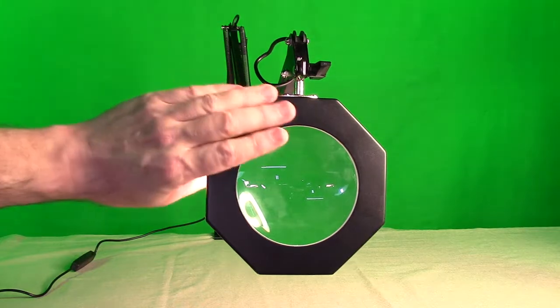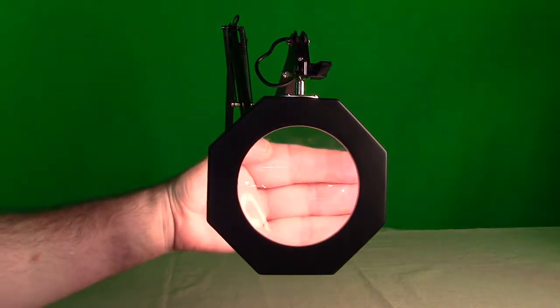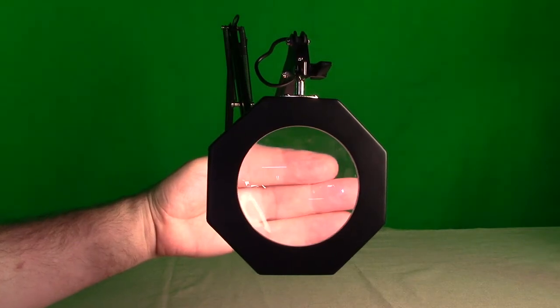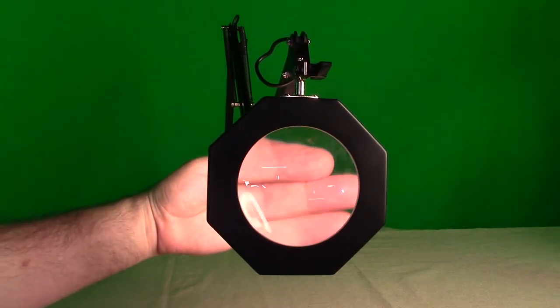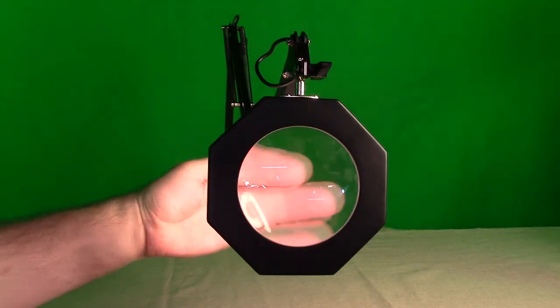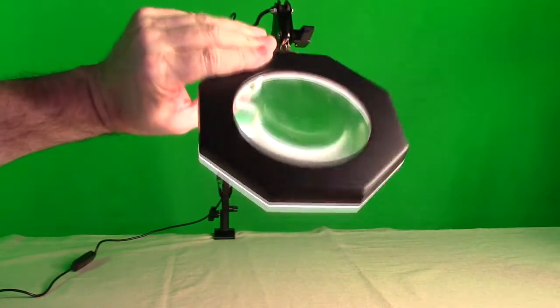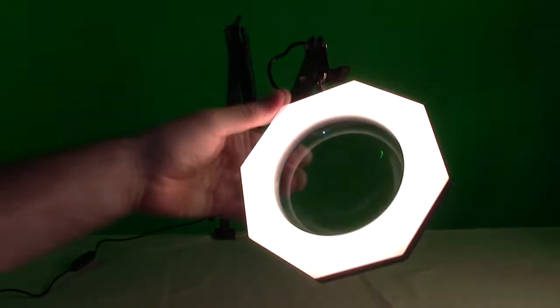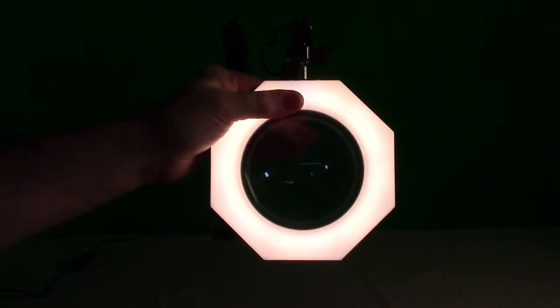So here I have the light turned on and it can illuminate anything behind there like you see my hand right there. And studio lights are around but this is actually amplifying my hand brighter than the studio lights which is really great. And again you have all that control of the light and the color and the brightness using that controller.